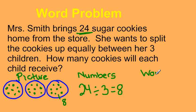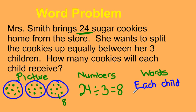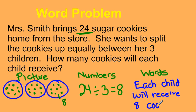In words, we would write our therefore statement: each child will receive 8 cookies. So there is a complete solution. We have pictures where we drew our groups, we have the numbers — 24 divided by 3 equals 8 — and we've included our words: each child will receive 8 cookies. And that is division by grouping.